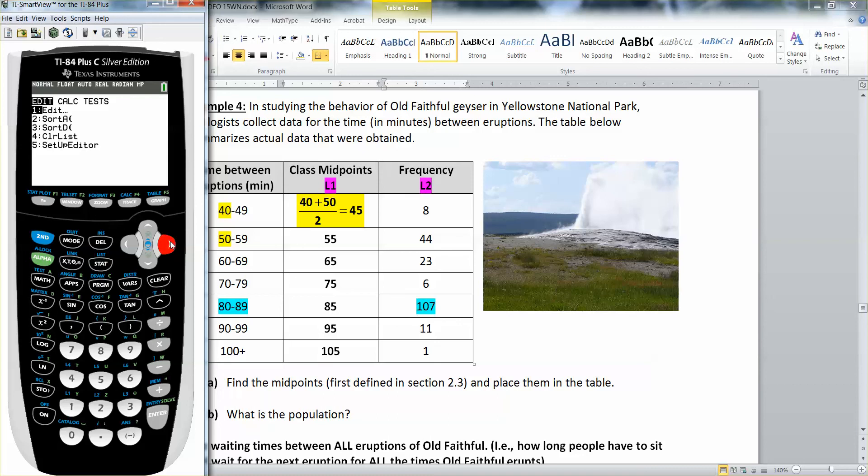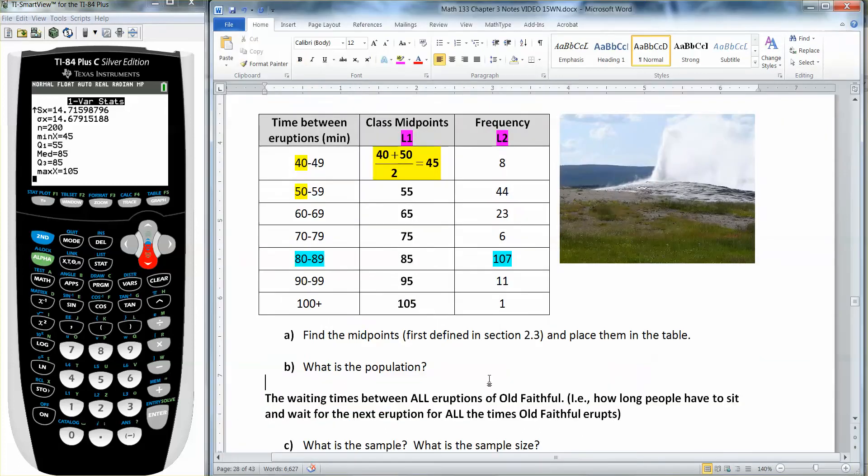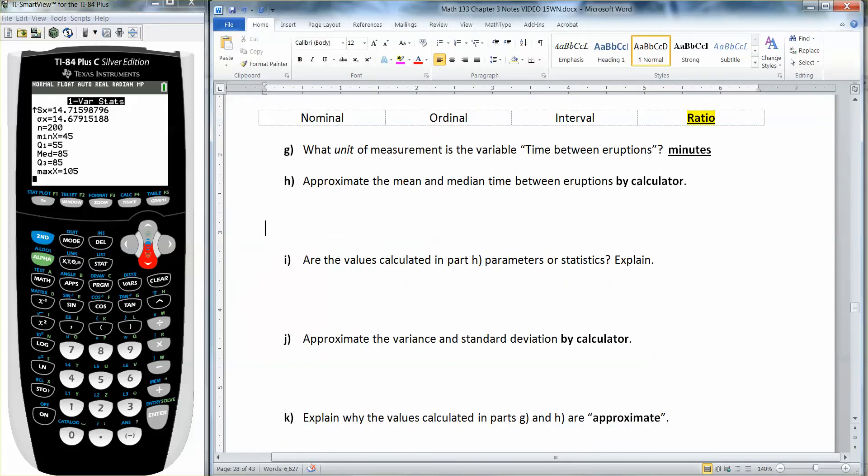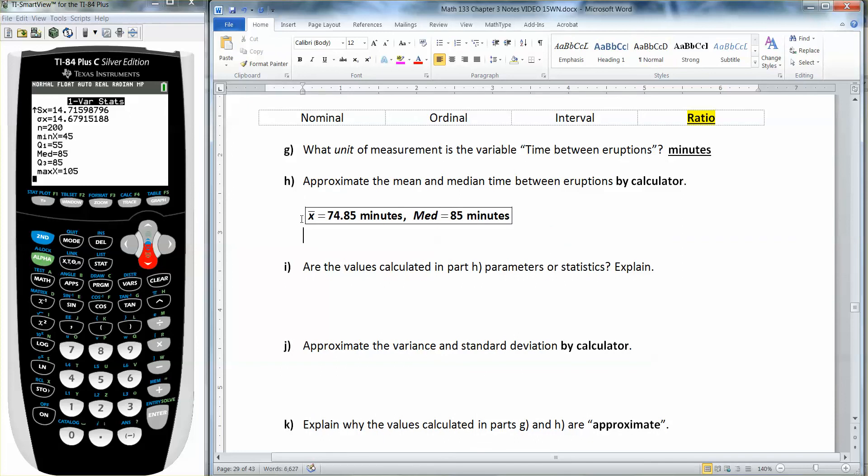Now I press stat, calculate. I pick number one, one variable stats. My list of data is in the midpoints. That's L1. So second, one. And we use my down arrow. And then my frequency list, that's the frequencies. That's L2. So second, two. Enter. And press enter on calculate. And there it is. The mean is 74.85 minutes, because that's our unit here. And then if I scroll down just a little bit, the median is 85 minutes. So the mean was 74.85 and the median was 85, all in minutes.